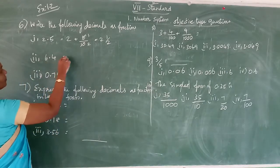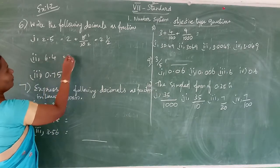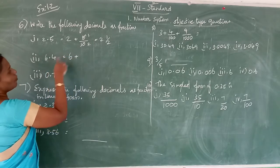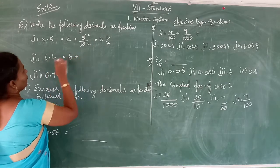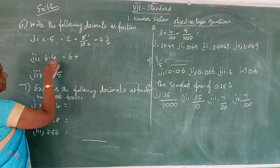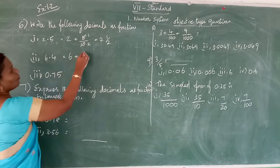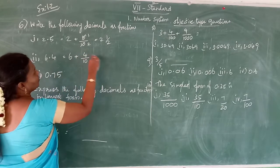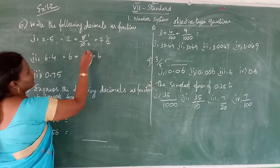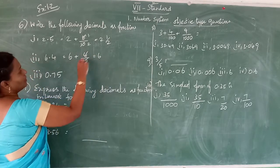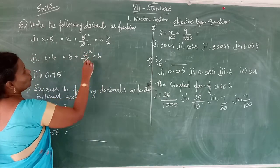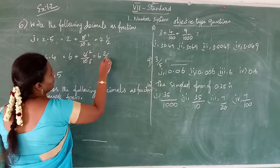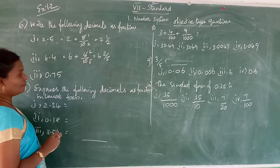See the next one. The digit 4 is in the tenths space, so write 4 by 10. Cancel with the 2 times table — this gives 6 and 2 by 5, so 6 and 2/5.